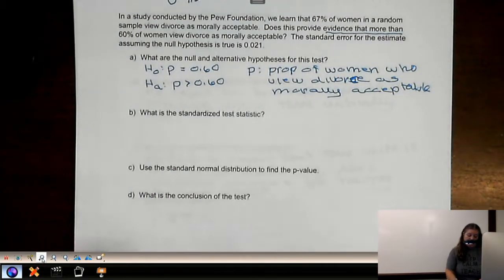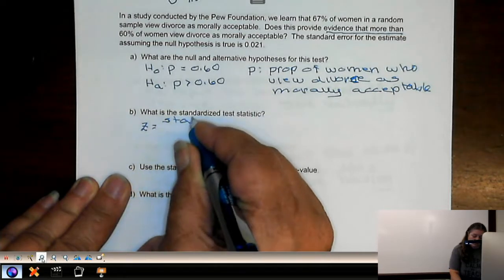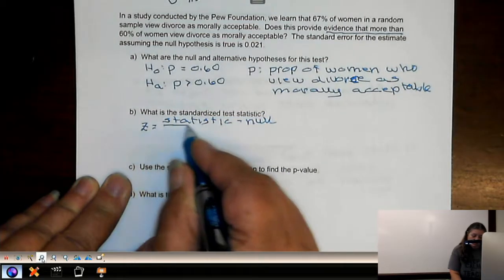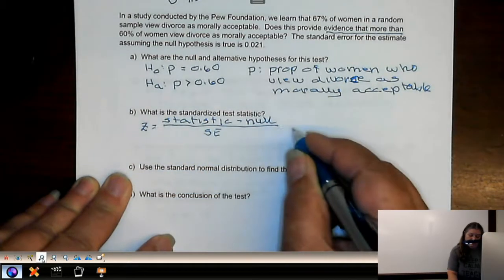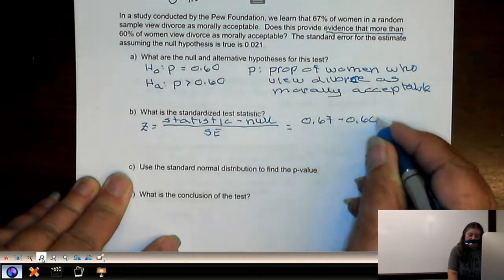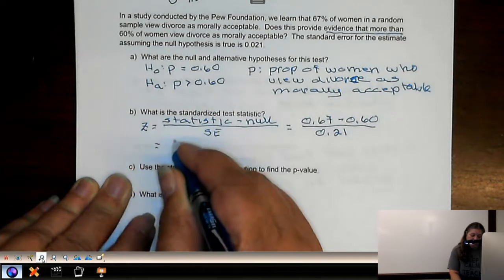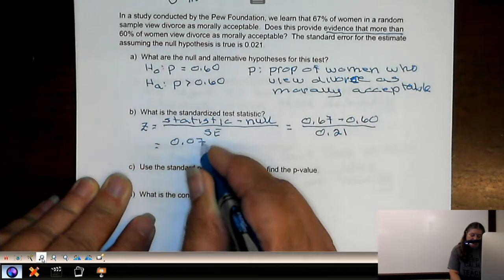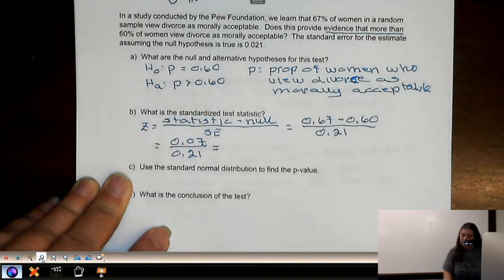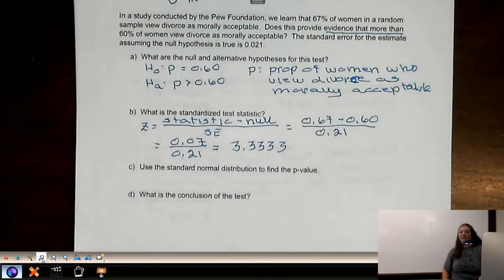The standardized test statistic, z is statistic minus null over standard error. So our statistic is 0.67 minus 0.60, which is the value in the null, over the standard error of 0.21. This gives us 0.07 over 0.21. And if we divide it out, we get 3.3333 for as many decimal places as you want.